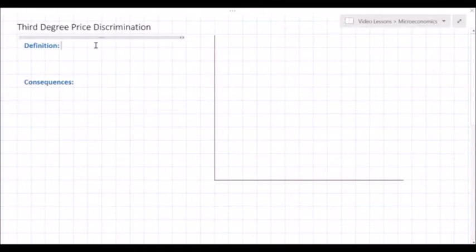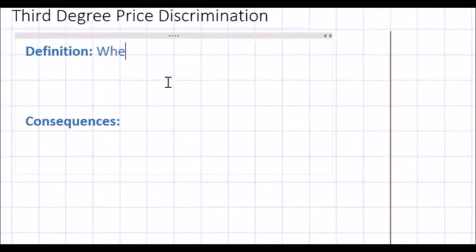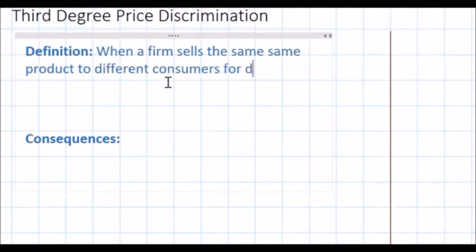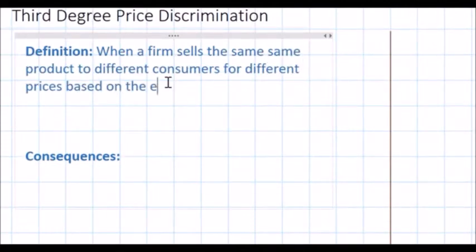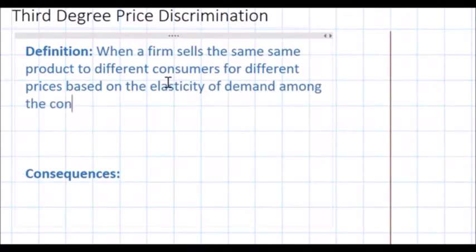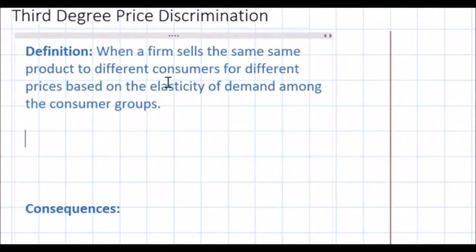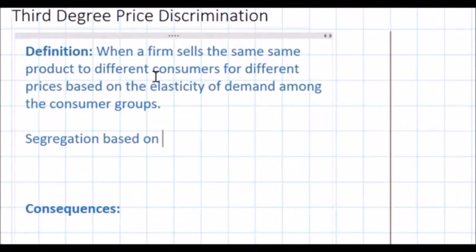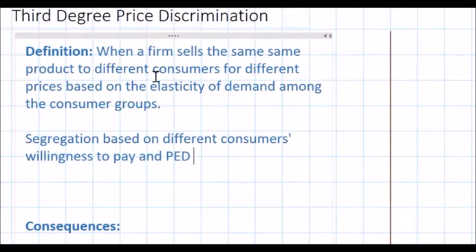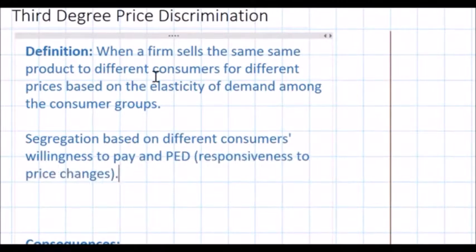We're going to start with the definition of third-degree price discrimination. This is when a firm sells the same product to different consumers for different prices based on the elasticity of demand among the consumer groups. In order for price discrimination to occur, a firm must be able to segregate the market based on consumer groups or willingness to pay — in this case based on different consumers' willingness to pay and price elasticities of demand, in other words responsiveness to price changes.